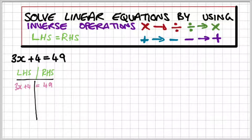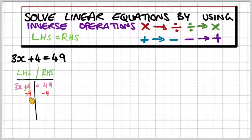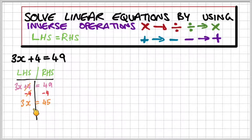So what we can do is take the 4 and minus 4 from both sides. 3x plus 4 minus 4 cancels out, and we get 49 minus 4 on the right-hand side. Cleaning that up, the left-hand side has 3x equal to 45, because 49 minus 4 makes 45.